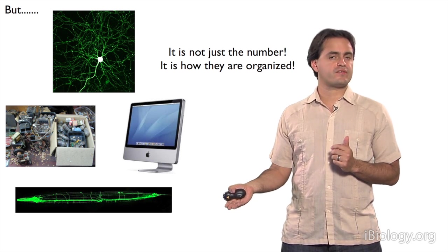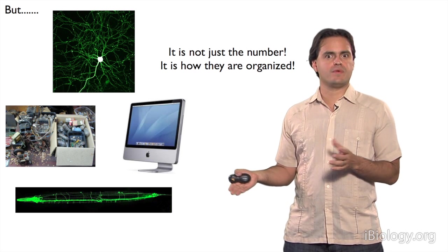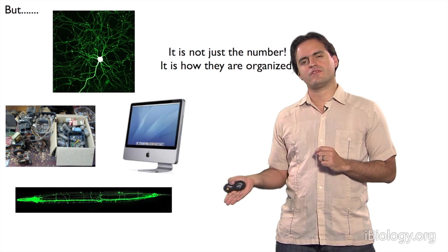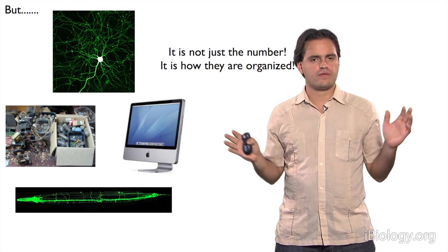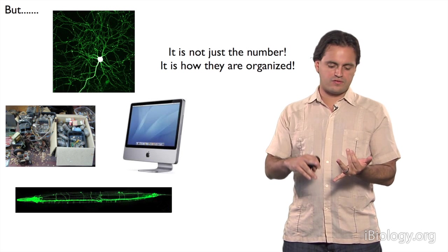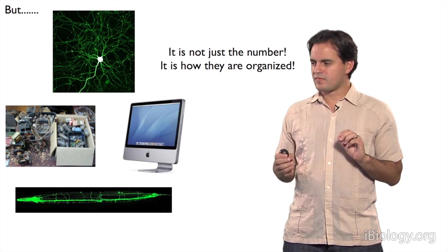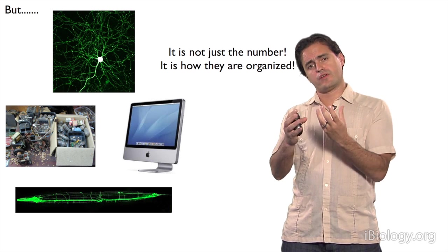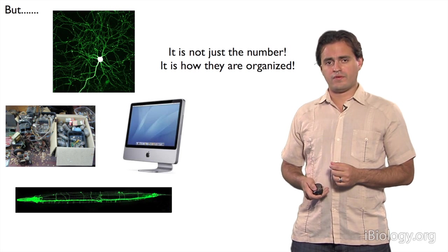C. elegans only has 302 neurons. That's far fewer neurons than 100 billion neurons that you find in a single human brain. But those 302 neurons are organized in such a way that allows the animal to create a representation of its world, to find mates, to avoid predators, to find food. That's what we're interested in. We're interested in understanding how is it that those neurons get organized and how that organization then underlies the behavior of the nematode.